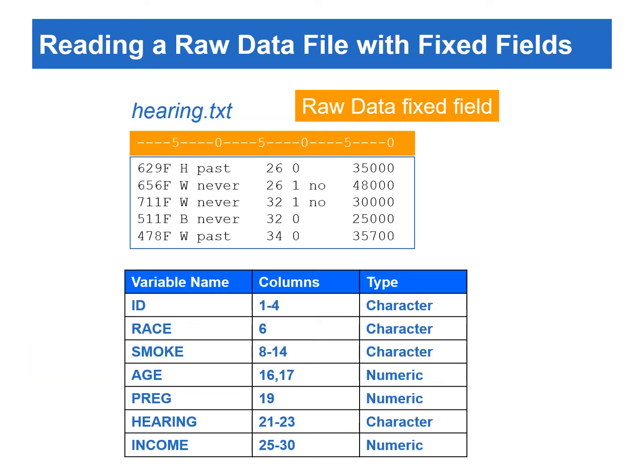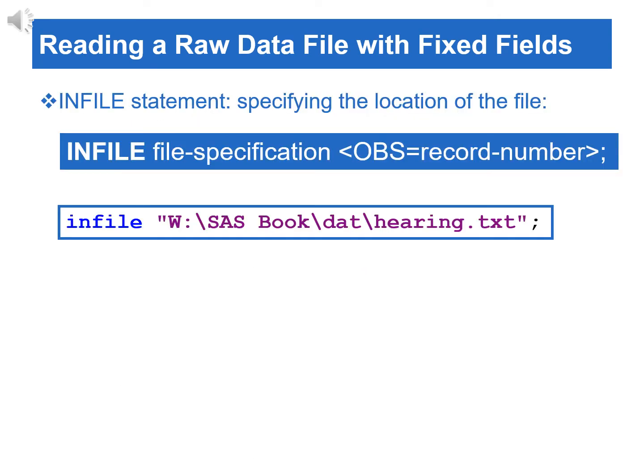Now let's talk about reading the raw data file. A raw data file with fixed fields means that the values of the variables occupy the same location for all the observations. For example, the hearing text file contains variables in the fixed fields. To read a text file, we need to use the infile statement. File specification is used to specify the location of the input data. The OBS option is used to specify the first number of records to be read. This option is useful for reading a data set with many observations. For example, you can read the first few observations to verify if the data is being read correctly, before continuing to read the entire data set.